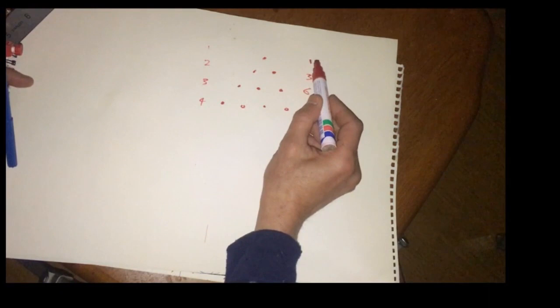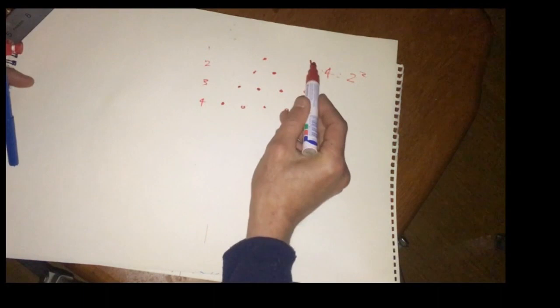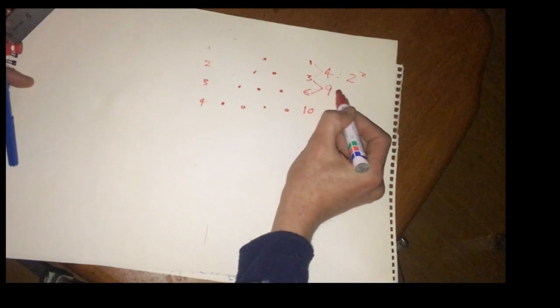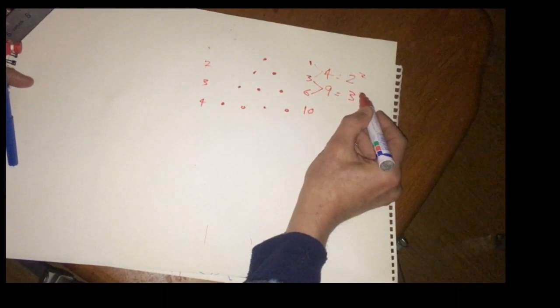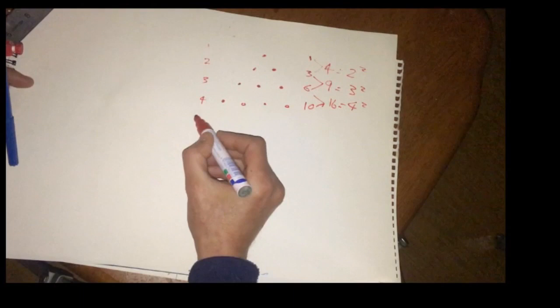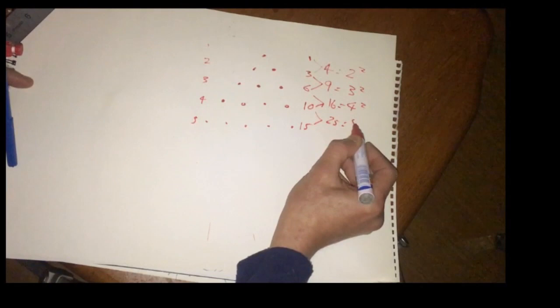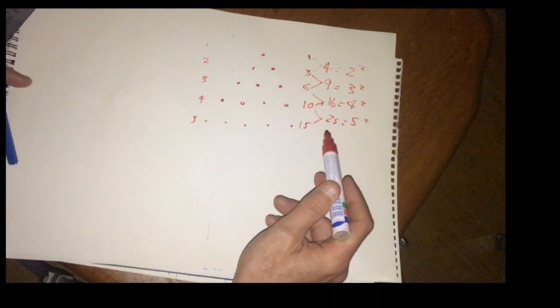These are the triangular numbers as they're called: one, three, six, ten. Now in the second dimension: the first plus the second — one plus two equals four, which is two squared. The second plus third: three plus six equals nine, that's three squared. Six plus ten is sixteen, equals four squared.